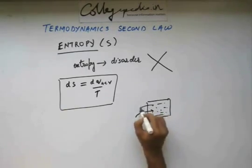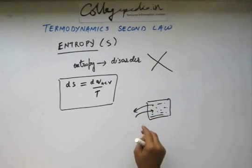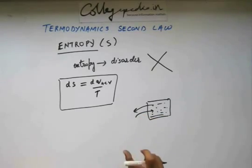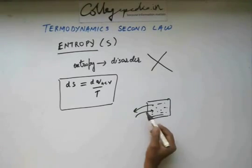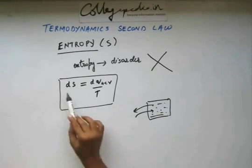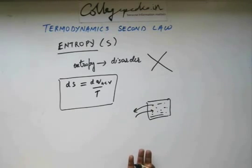If heat is taken out from the system, then a small amount of heat being taken out from the system, that as per our sign convention, that dQ will be negative. So if you are taking heat out of the system, then entropy will decrease. So if you are giving heat, you are increasing entropy. If you are taking away heat, you are decreasing entropy.